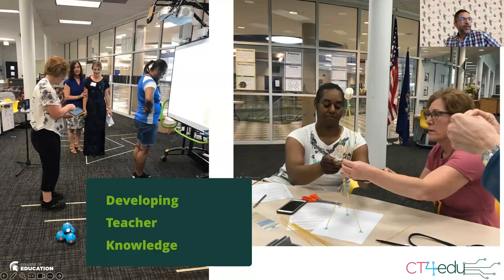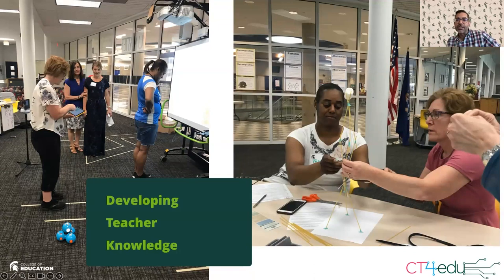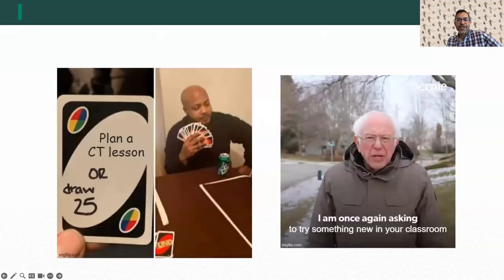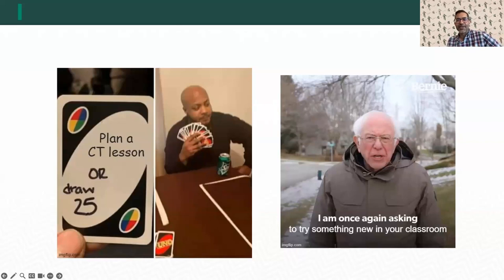After about three weeks of online learning and three days in-person learning about CT, we did a meme activity to gauge where teachers were at. If you've played UNO, the choice was: plan a CT lesson or draw 25. Teachers were choosing to draw 25 rather than plan a CT lesson. And there's a Bernie Sanders meme of 'I'm once again asking you to try something new in your classroom.' So that captures where teachers were at that point.